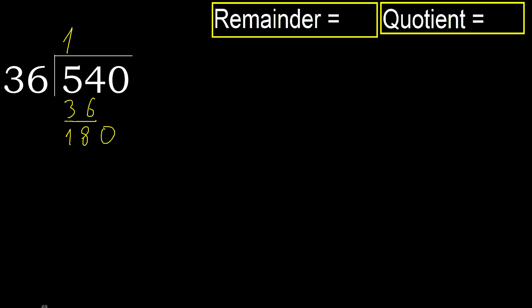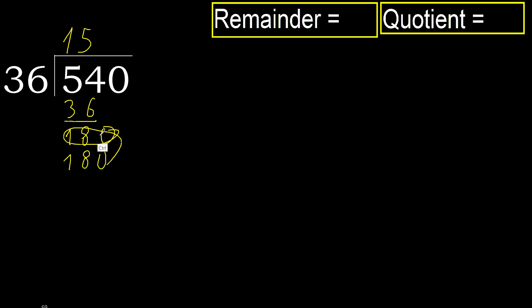Next, 180. 36 multiplied by 6 is greater. Multiplied by 5 is 180, it's not greater, okay. Subtract: 0.